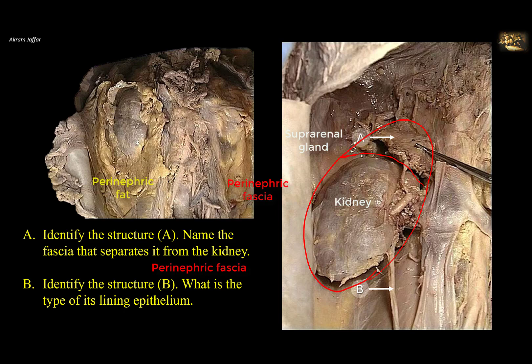However, there is normal mobility of the kidney of approximately 3 cm with respiration and when changing position from supine to erect and vice versa. Structure B is obviously the ureter — a tubular structure descending from the renal pelvis at the hilum of the kidney. It has an abdominal and pelvic part, and you can see its relation anterior to psoas major muscle. Its lining epithelium is the same as the excretory urinary passages: the urothelium, or transitional epithelium.